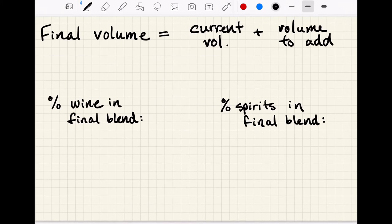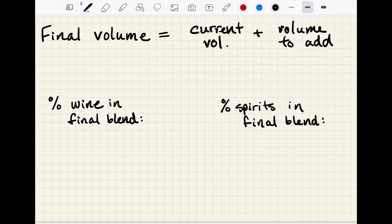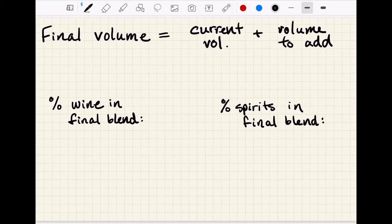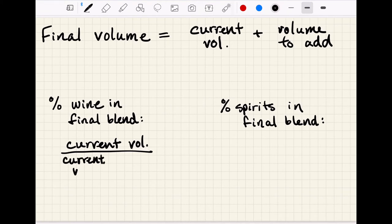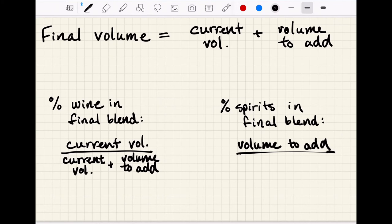So then if we look at our percentages represented by each component, the percentage of the wine in the final blend is represented by that current volume of wine out of that total. So this is over the current volume plus the volume to add. And then similarly with the spirits, that will be the volume of the spirits to add over the total resulting final volume. So the same on the bottom. It's the current volume plus the volume to add.